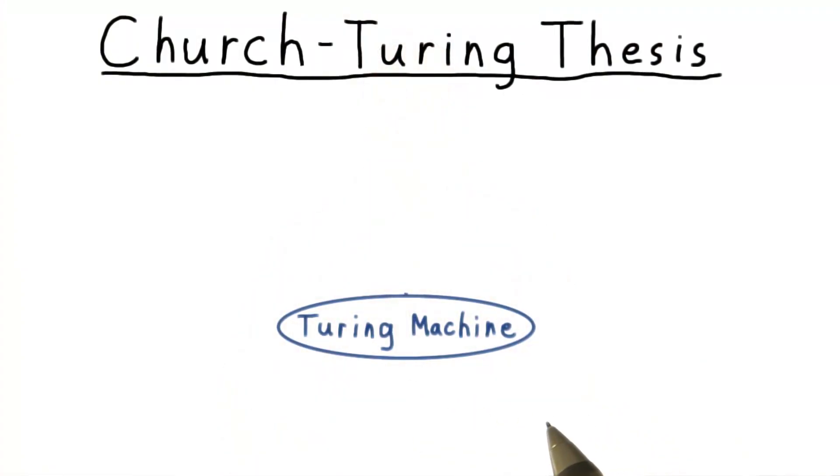To convince you of the Church-Turing thesis, I'll start from the basic Turing machine and then branch out, showing that it is equivalent to machines as powerful as the most advanced machines today or in any conceivable future.